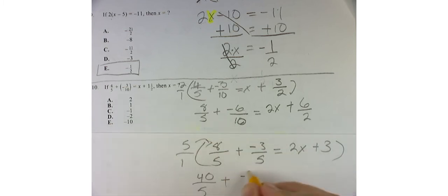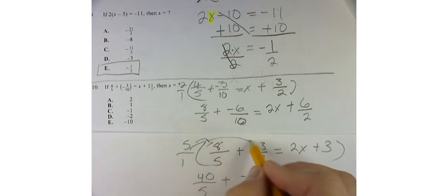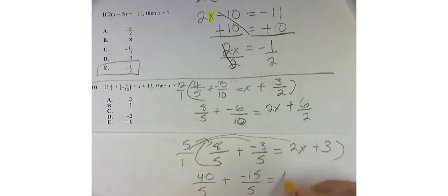Plus negative 15 over 5. 5 times 2x is 10x over 1. I don't need to write down the 1. Plus 5 times 3 is 15.